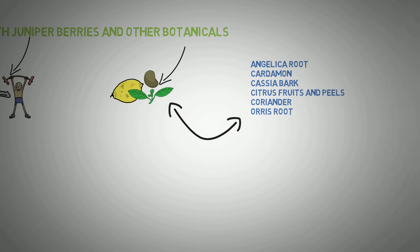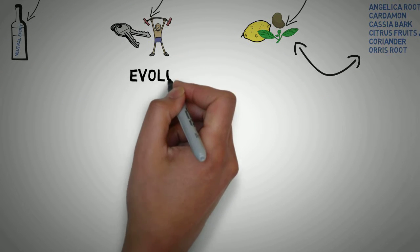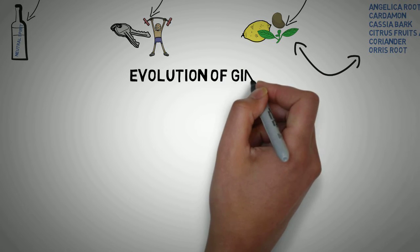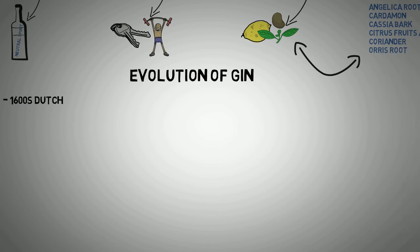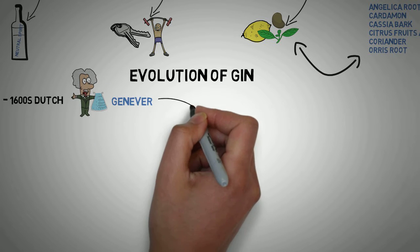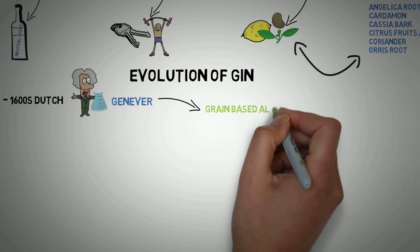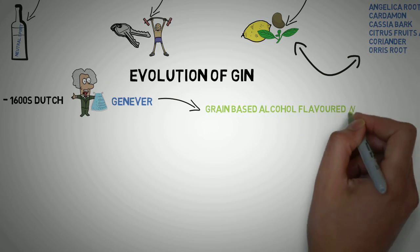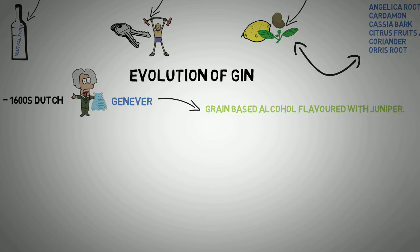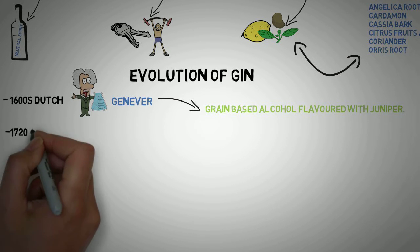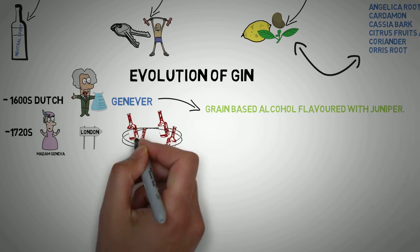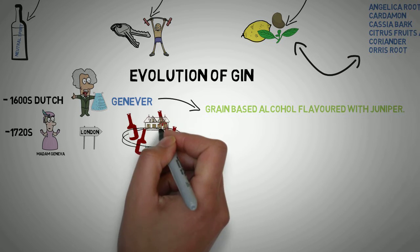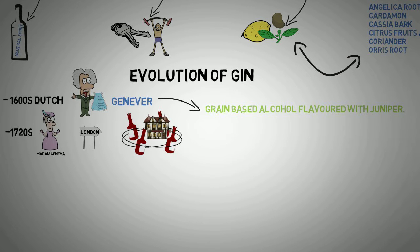We have a couple of examples over there showing how gin evolved over the years. In the 1600s, the Dutch experimented with Geneva, which is a grain-based alcohol flavored with juniper berries — back then it was used as a cure. In the 1720s, Geneva came to London, which caused the gin craze, with billions of gallons of alcohol being drunk.